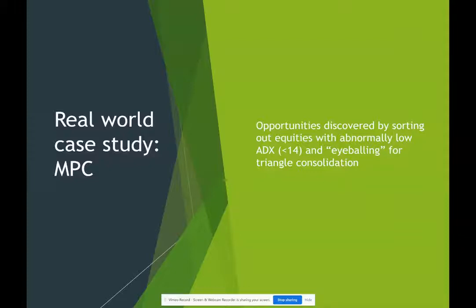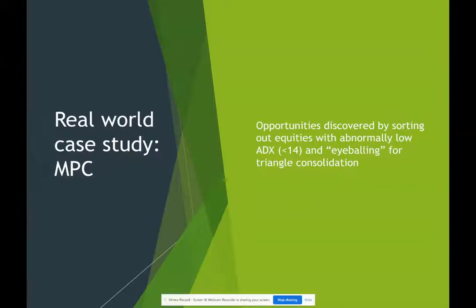Let's look at a real world case study. I did not trade this — I was watching it, I missed it, but this happened very recently. What I do is I keep an ongoing list of triangles. I set a sort to take a look at equities that have an abnormally low ADX — this is using a standard ADX of 14 periods — and I want to know if the ADX is less than 14. That's going to set up a list of stocks. On Wednesday of this week there were maybe 15 stocks to eyeball, and MPC is one of the recent opportunities.